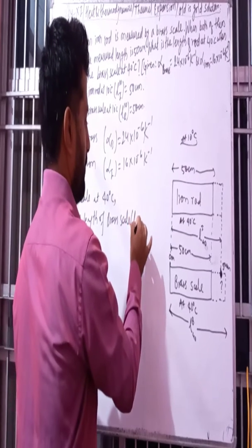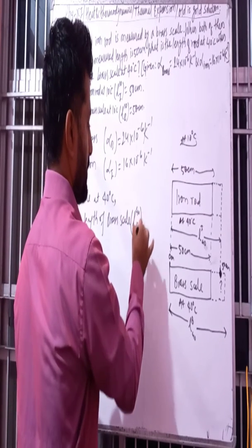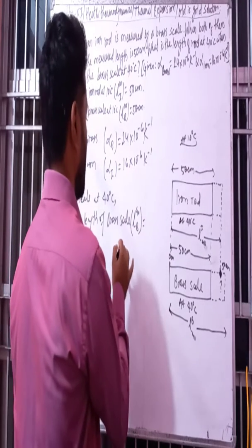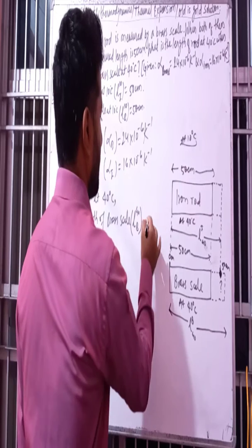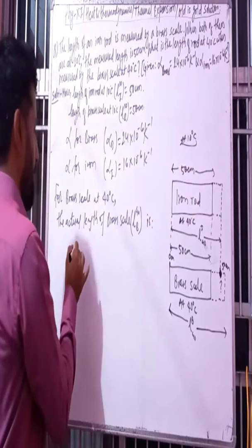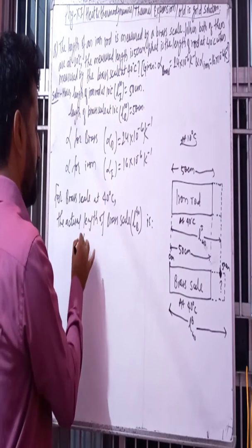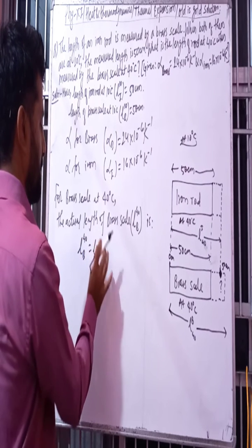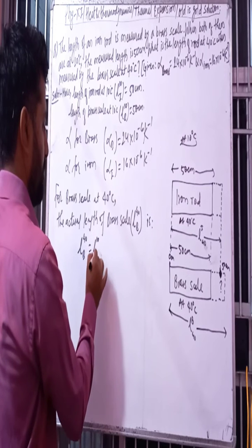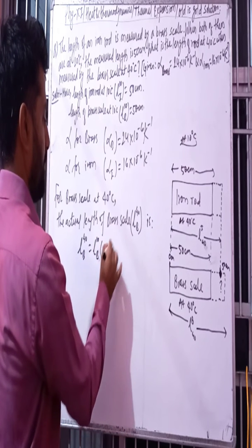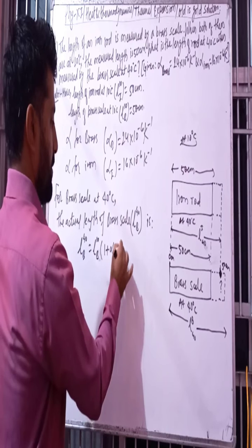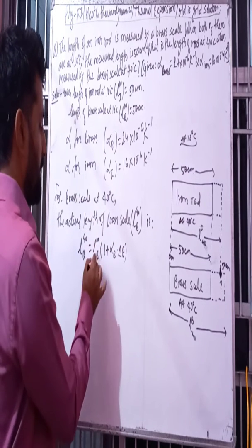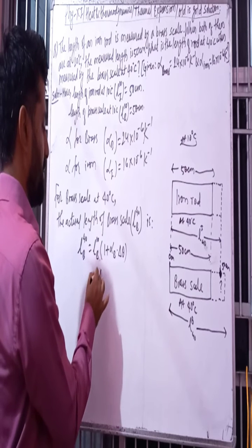L brass at 40 degrees centigrade equals — using the formula — L brass 40 equals L10 brass times 1 plus alpha brass into delta temperature. Brass scale length at 10°C is 50 cm, so: 50 times 1 plus alpha...